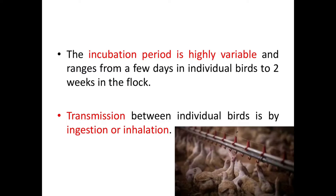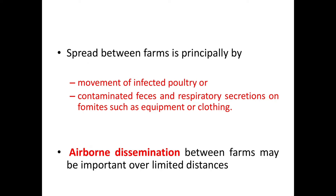The incubation period is highly variable, ranging from a few days in individual birds to two weeks in the flock. Transmission between individual birds is by ingestion or inhalation. Spread between farms is principally by movement of infected poultry or contaminated feces and respiratory secretions on fomites such as equipment or clothing. Airborne dissemination between farms may also be very important over limited distances.